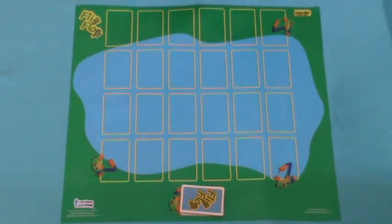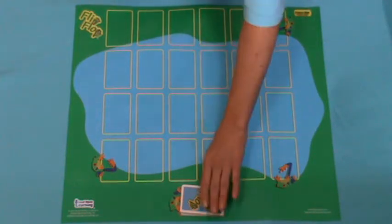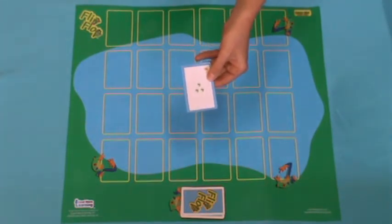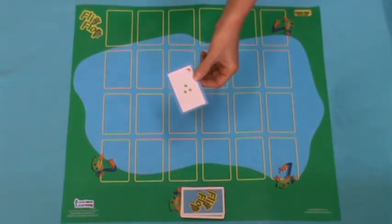A game mat is not required, and students can be taught to play this game without a mat. I will be using a mat for this demonstration. Take a card from the draw pile and say the value of the card. Three. The card is placed face up in a pile.